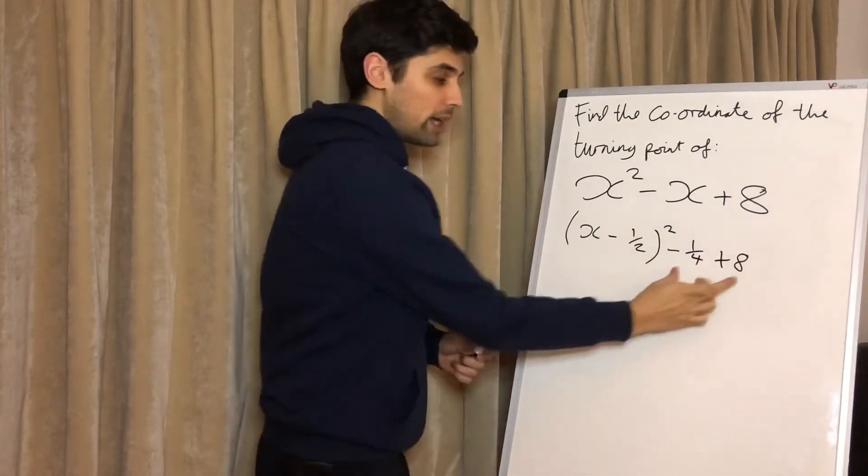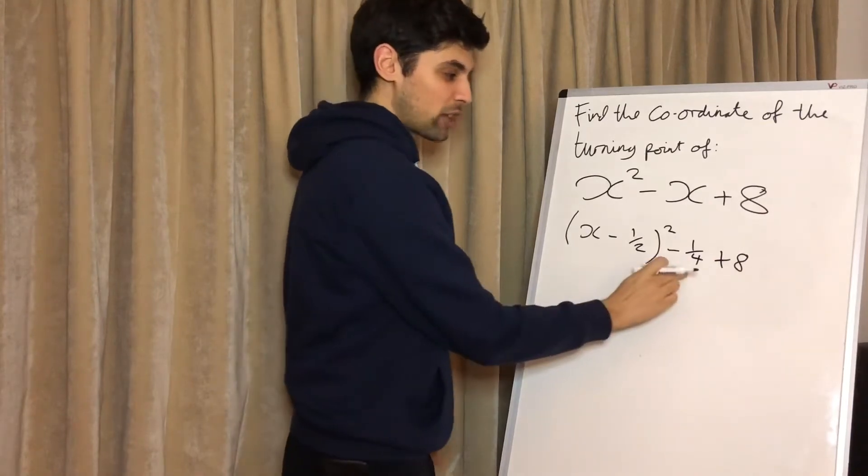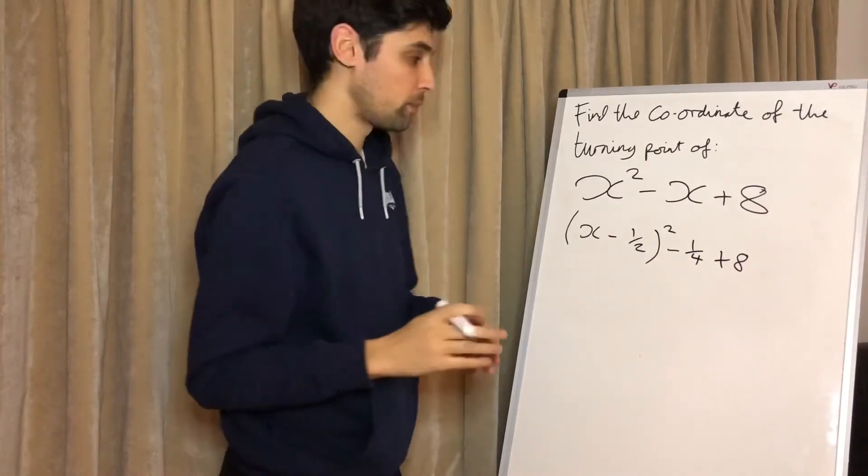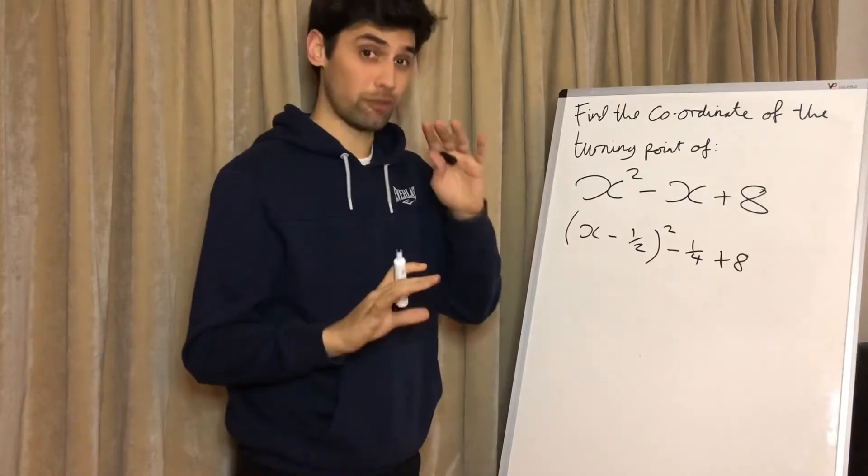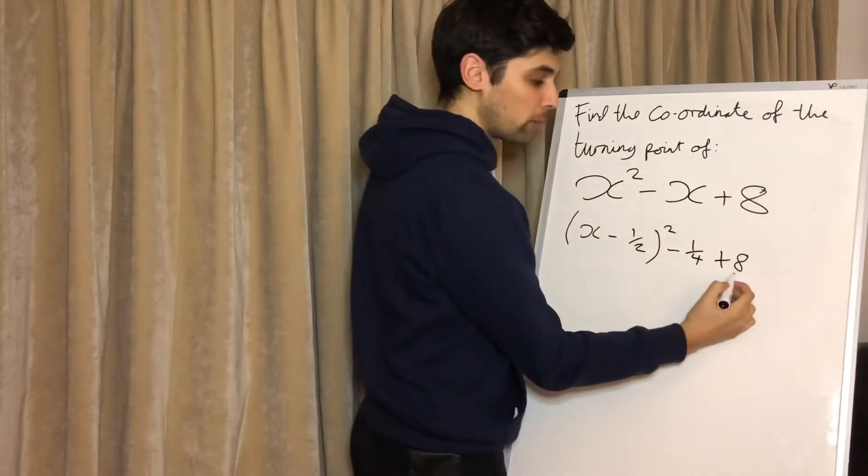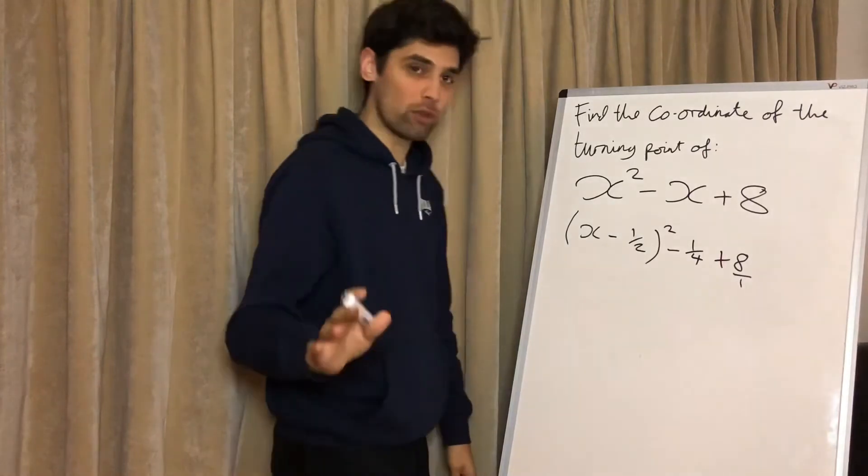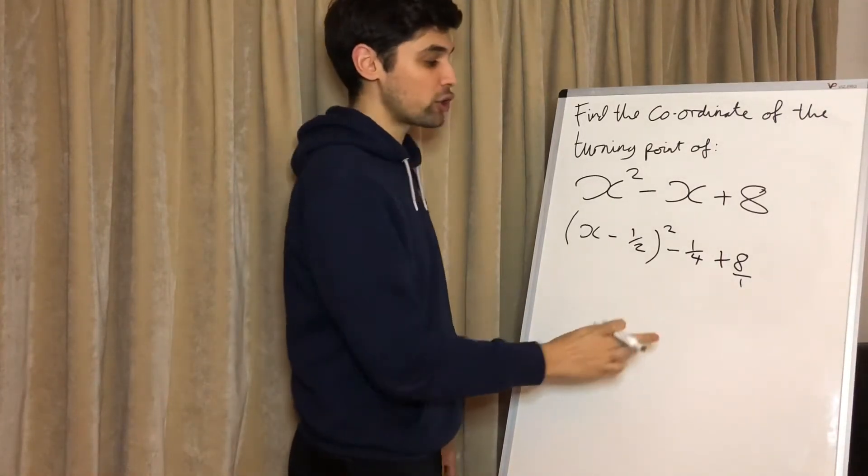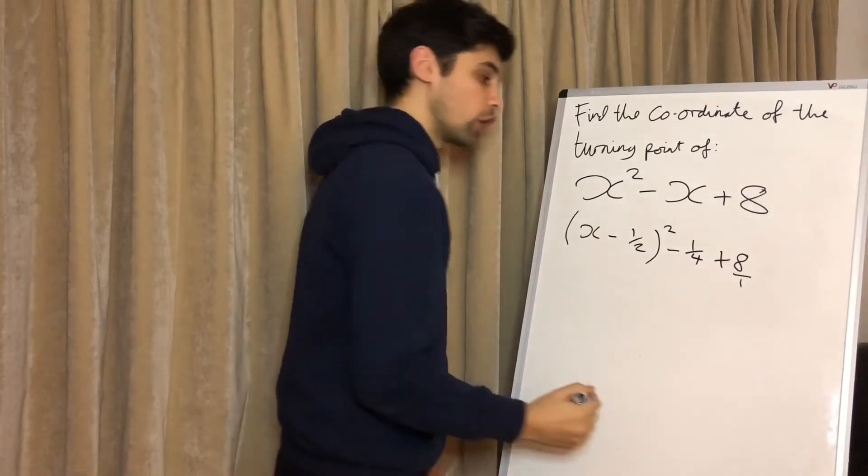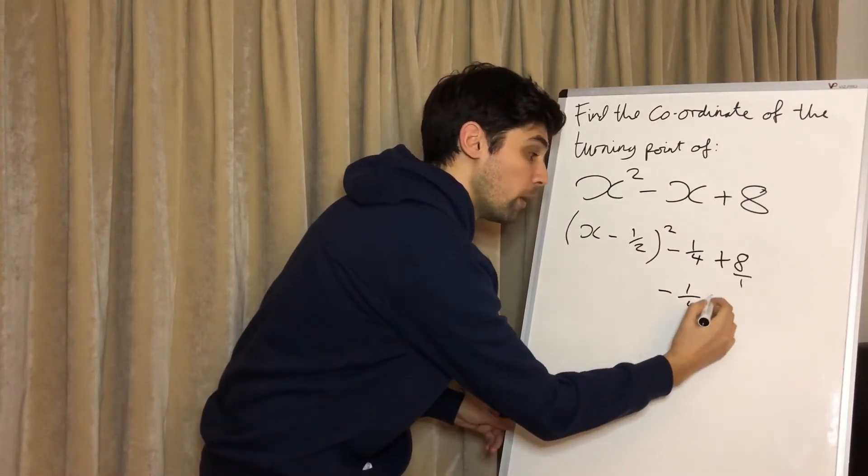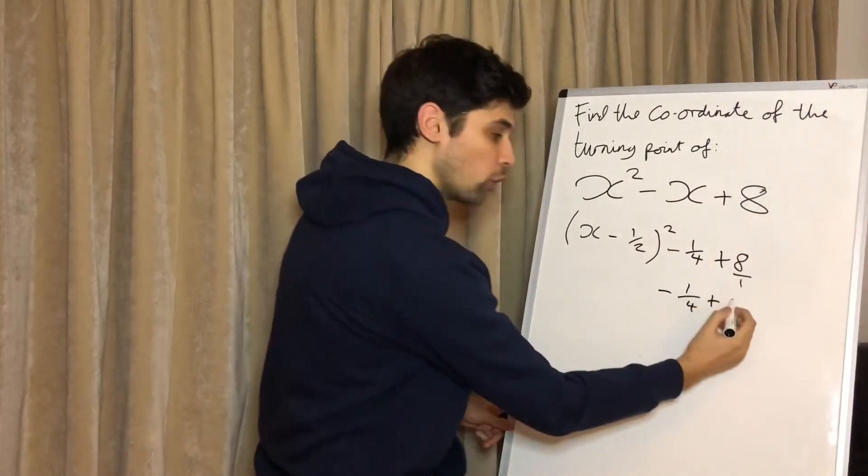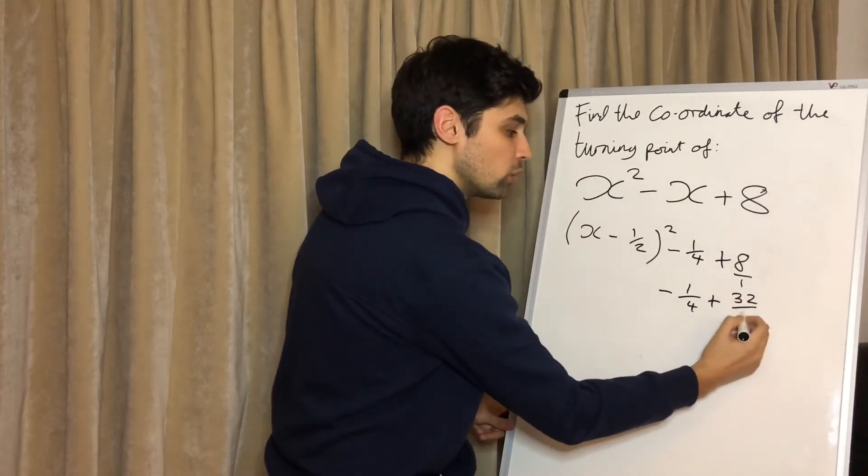The next step is to tidy up the outside, but a fraction and a number doesn't look very nice. Here's the trick: whenever we're doing addition or subtraction between fractions and numbers, change the whole number into a fraction. Let's call it eight over one, because that makes it easier to spot a common denominator. We're going to change this to minus one over four plus, and we times the top and bottom by four, 32 over four.